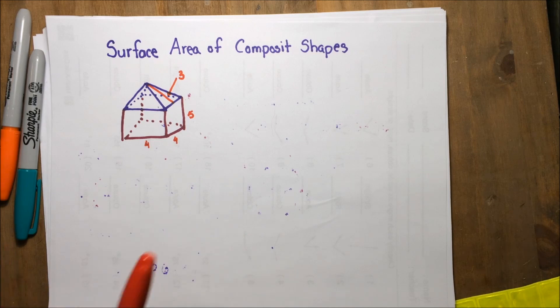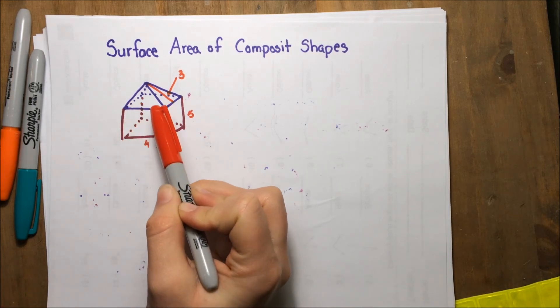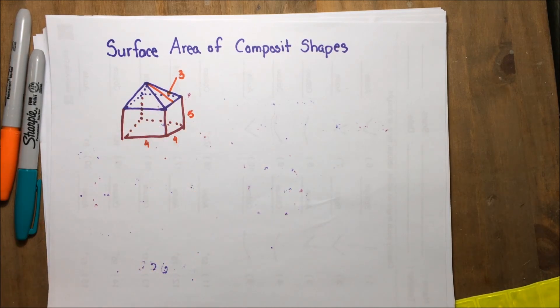A composite shape is a shape like the one we have here. It's made up of multiple simple 3D shapes. For example, in our picture, you will see a rectangular prism on the bottom and then a square, because it's a 4x4, so a square prism on the bottom and a square pyramid on the top.